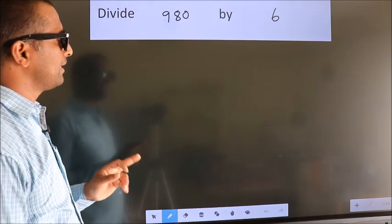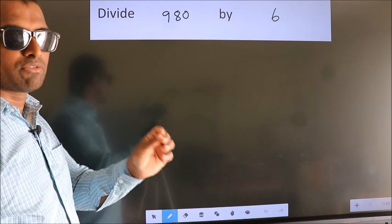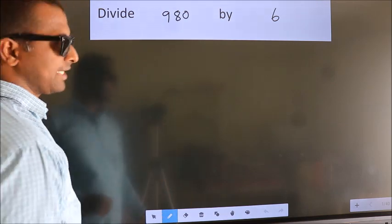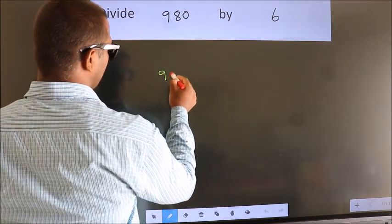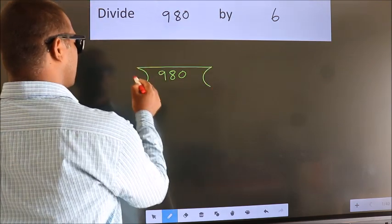Divide 980 by 6. To do this division, we should frame it in this way. 980 here, 6 here.